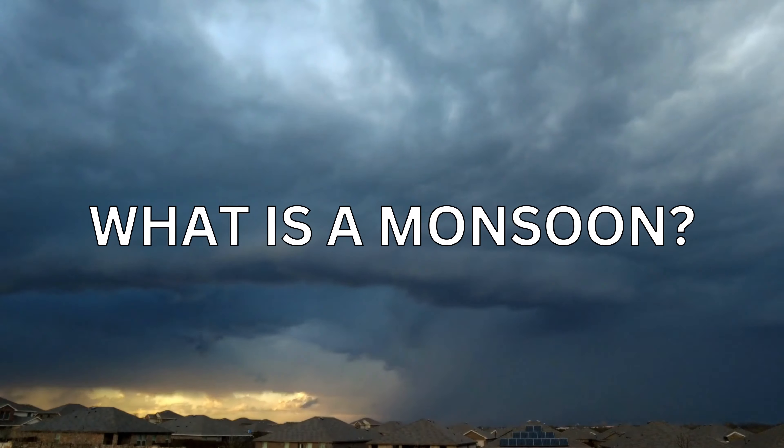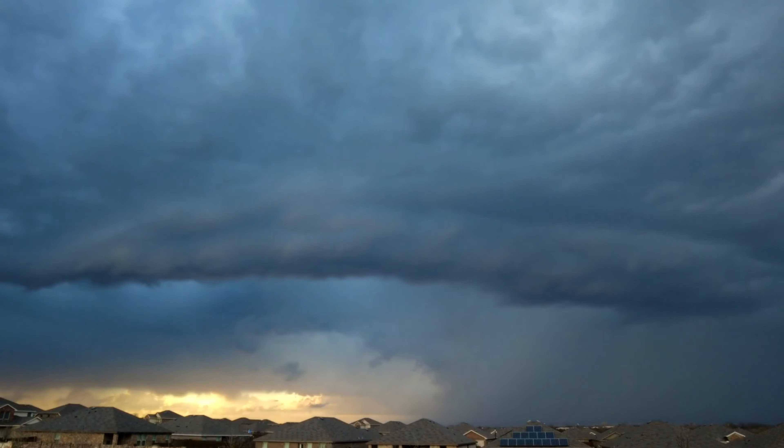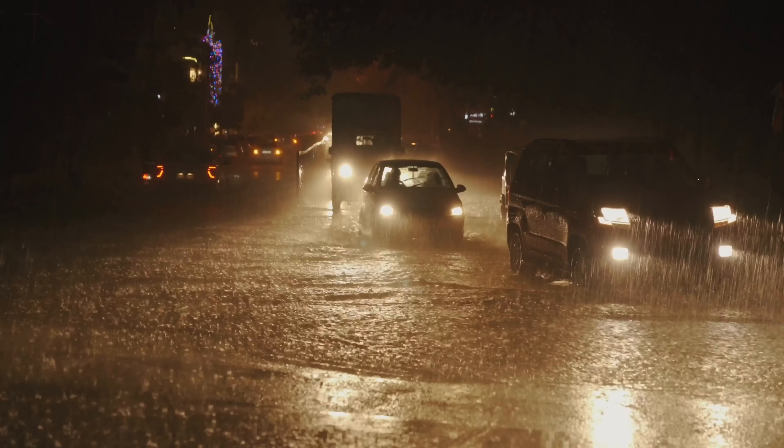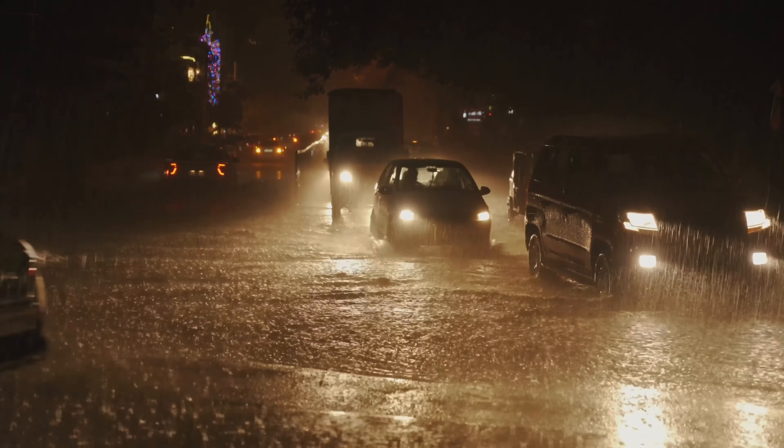What is a monsoon? A monsoon is a shift in winds that often causes a very rainy season or a very dry season. Although monsoons are usually associated with parts of Asia, they can happen in many tropical and subtropical regions, including several locations in the United States.